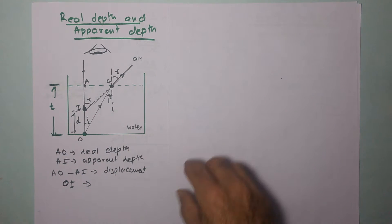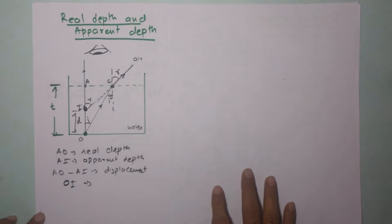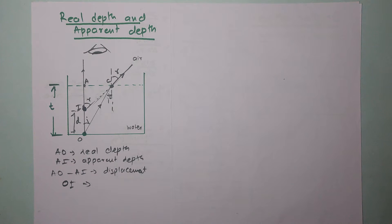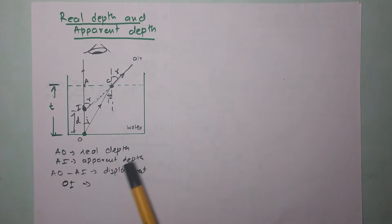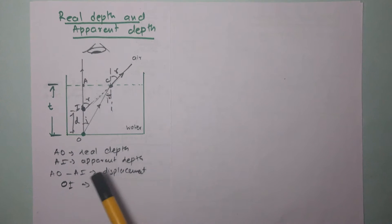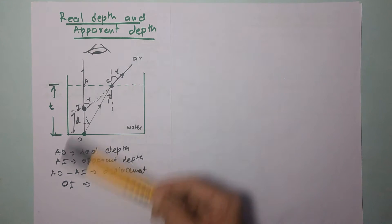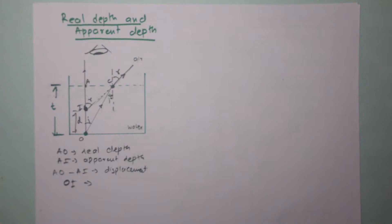One more application of refraction of light is the phenomenon of real depth and apparent depth. For example, if you are standing on the side of a swimming pool and looking inside, the floor of the swimming pool appears raised. That happens because of refraction of light, and we will study that in detail, looking at the various angles and the refractive index while we explore real depth and apparent depth.